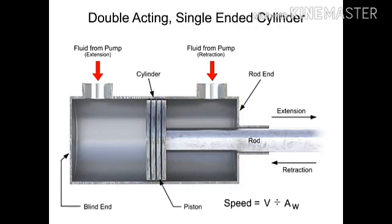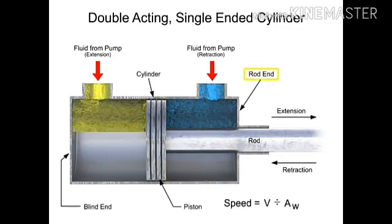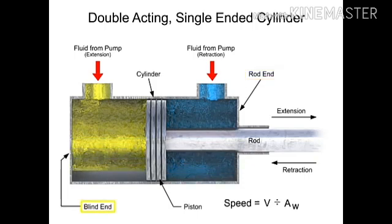Let's assume that the volumetric flow rate is equal for each inlet. Because the rod takes up space within the cylinder, less fluid is required to fill that side. This means that the fluid can fill the rod end side more quickly than it can fill the blind end.